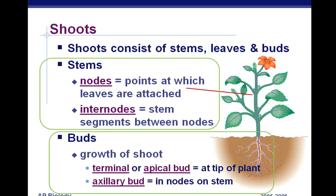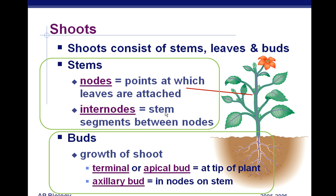Shoots consist of stems, leaves, and buds. The stem has something called a node — a node is a point where the leaves are attached. The internode is the stem portion between the nodes. 'Inter' means between, so that's located between the attachment points.